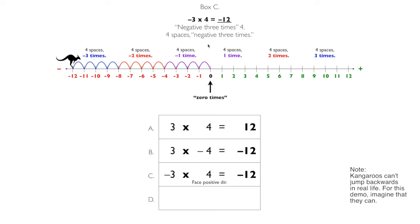Notice this about box C: even though the kangaroo was facing the positive direction, she ended up in negative territory because she was jumping backwards.